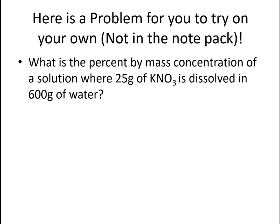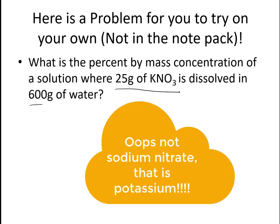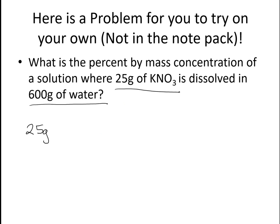So here's the solution. What is the percent by mass concentration of a solution where 25 grams of sodium nitrate is dissolved in 600 grams of water? So I've got my 25 grams of the potassium nitrate, and I am putting that into 600 grams of water. But it is the water plus the potassium nitrate that gives me my mass of solution. I'll multiply that by 100 to get my percentage by mass.